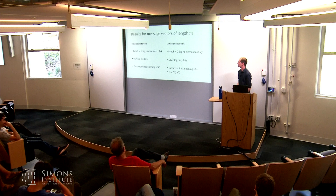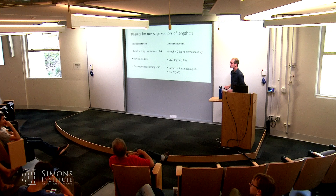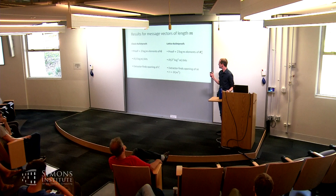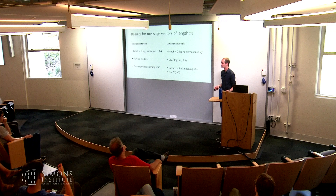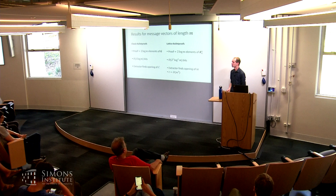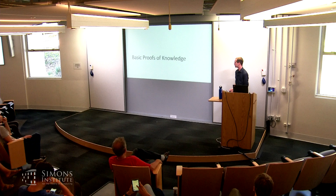That was some information about the proof sizes. To clarify: by 'lattice bulletproofs' on the slide, I mean just proving knowledge of a vector commitment, not a full proof system yet — we haven't fully worked out what it would mean to make an entire proof system on the right-hand side. I'll say a tiny bit more about this later. Let's talk about some basic proofs of knowledge based on the discrete logarithm problem and the SIS problem, and warm up by looking at the Schnorr protocol.